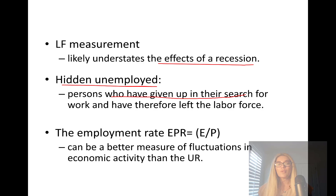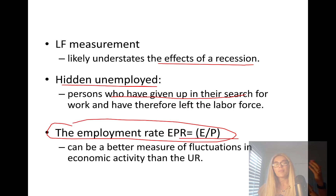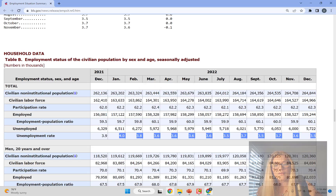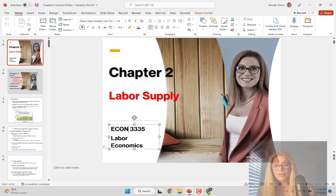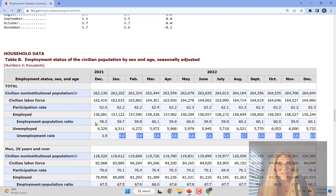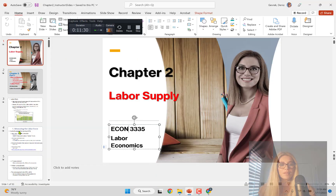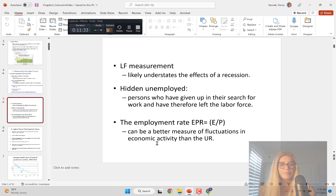The employment-population ratio is important to look at because it better measures fluctuations in economic activity than the unemployment rate. Looking at the BLS webpage, the unemployment rate has been improving; however, the employment-population ratio is around the same ballpark. So keep in mind there is some hidden unemployment going on.